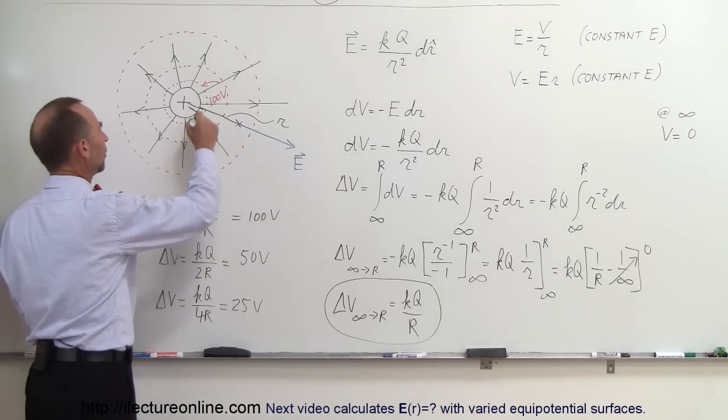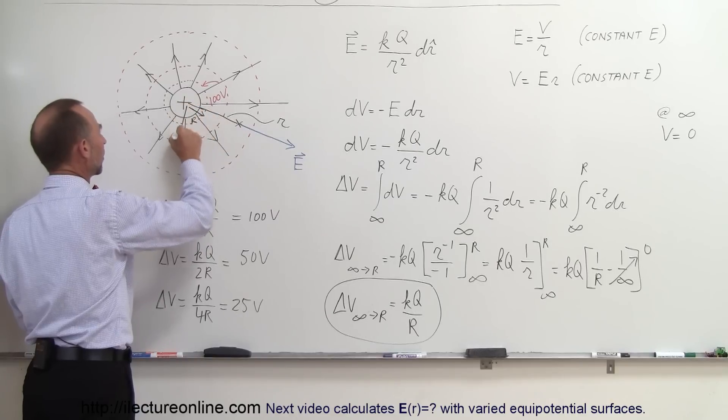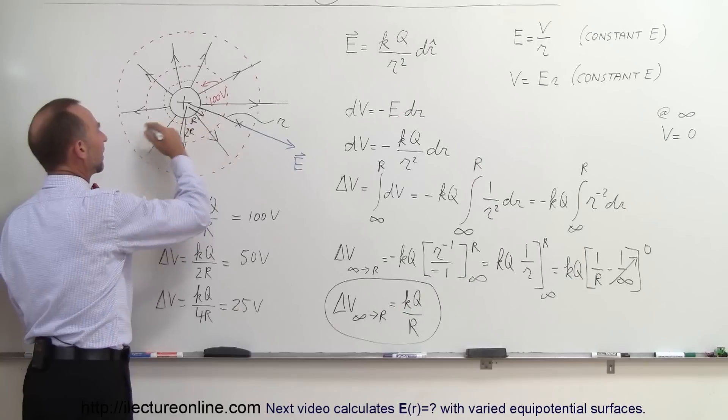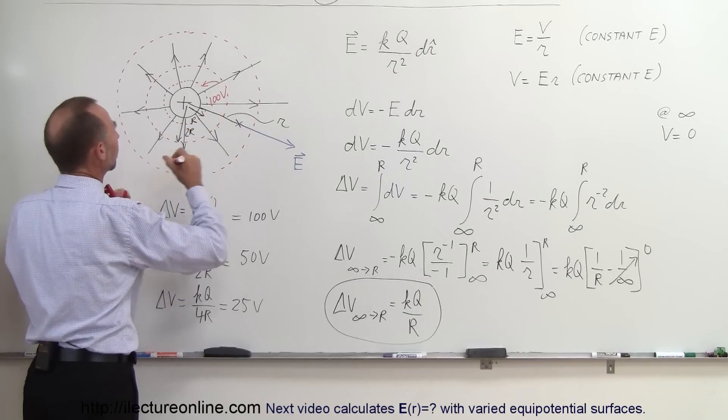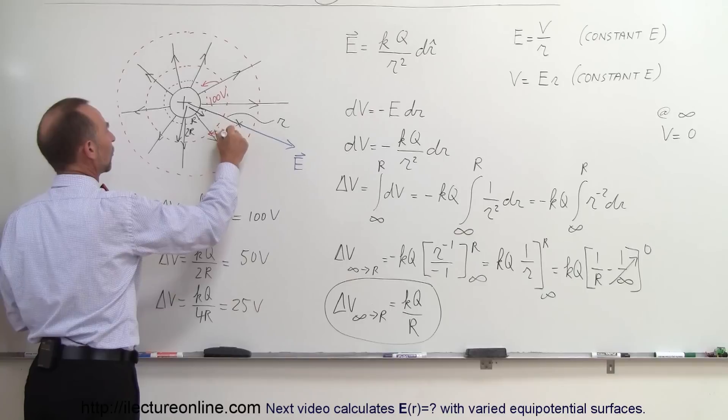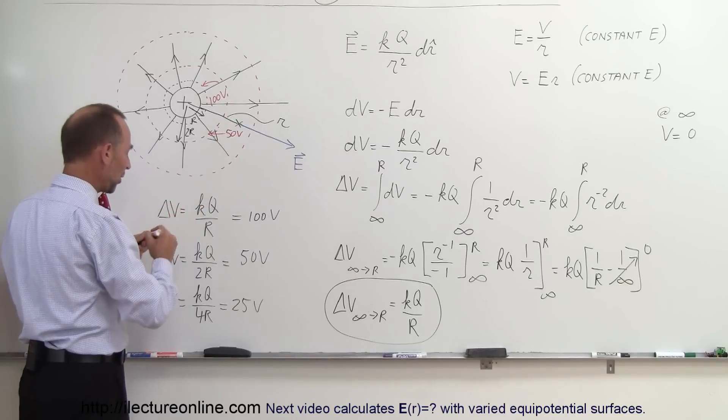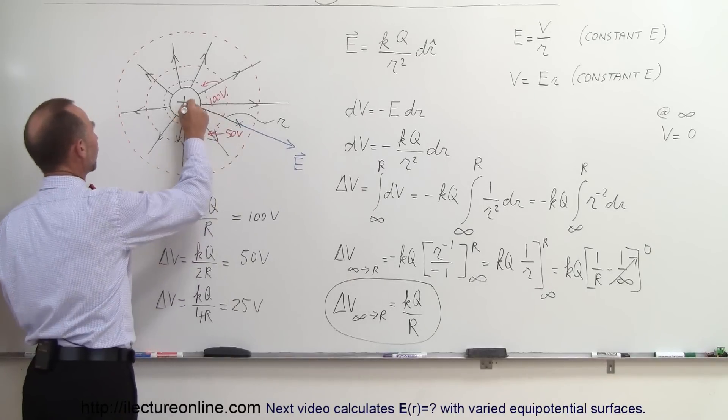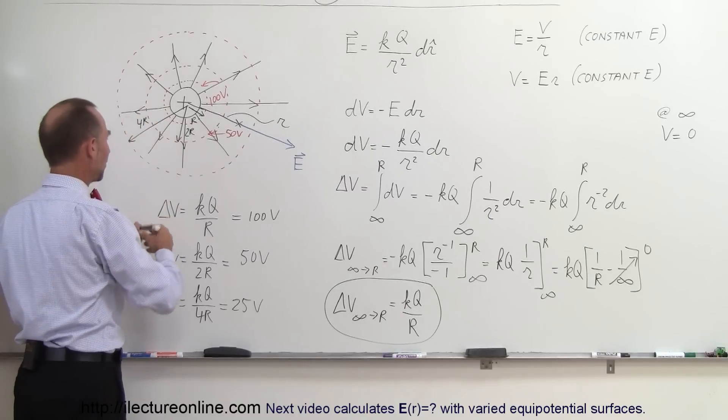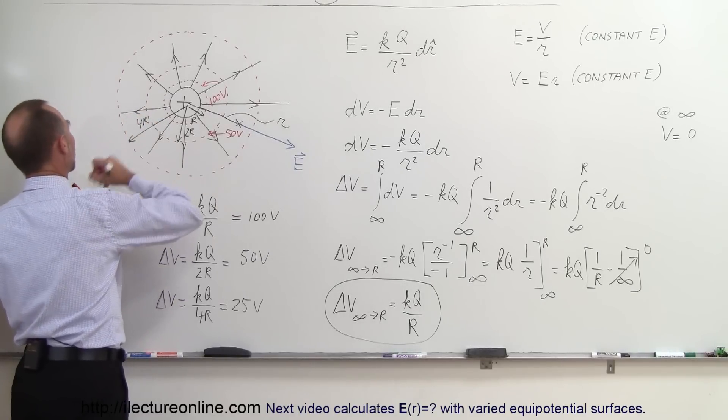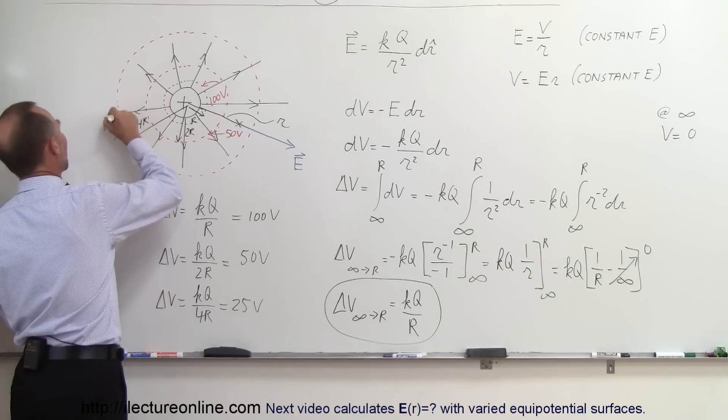If I now go out twice as far, so this would be 1R, so now if I go out 2R, at that point you can see that this would be 50 volts. So this equipotential surface would be 50 volts. And now if I want to go out to the point where it's 25 volts, now I have to go 4R away. So this would be distance of 4R, and now we get to a point where the surface would represent 25 volts.